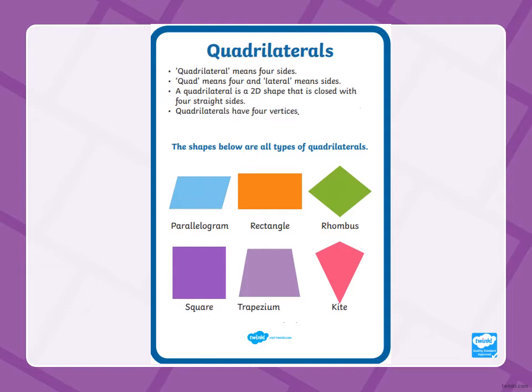The shapes below are all types of quadrilaterals. We have a parallelogram, rectangle, rhombus, square, trapezium, and a kite. Let's take a little bit of a closer look at these.